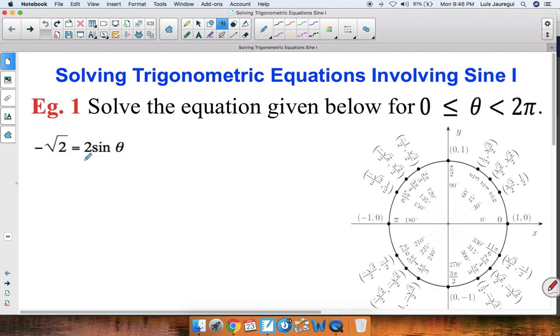Our first goal is to get the sine of theta by itself. To do so, let's divide both sides by 2. Now after we divide by 2, notice that this cancels, so we get that sine of theta equals negative square root of 2 over 2.